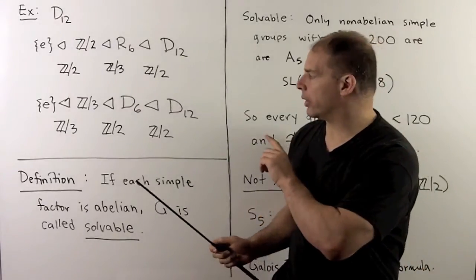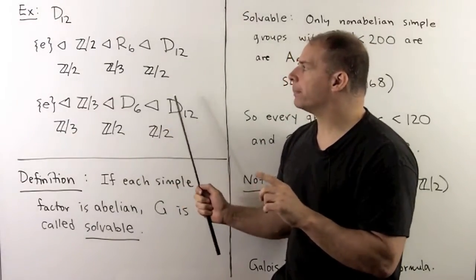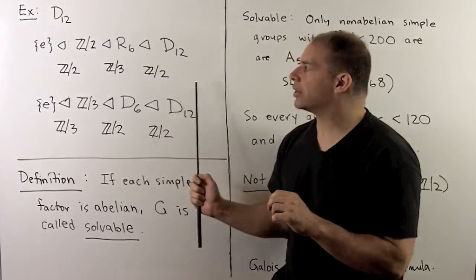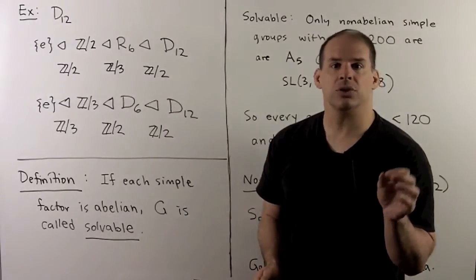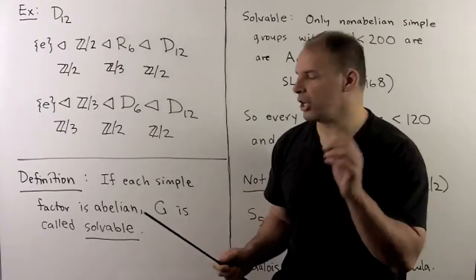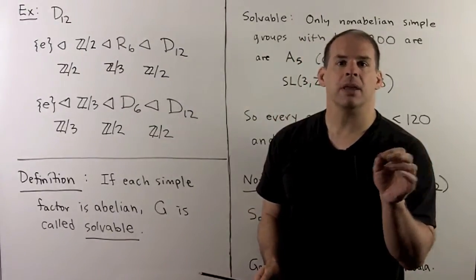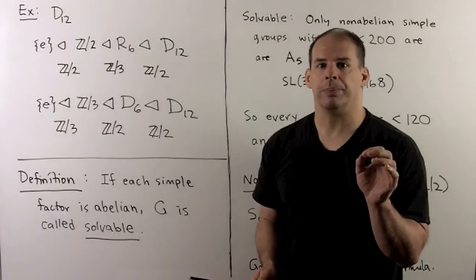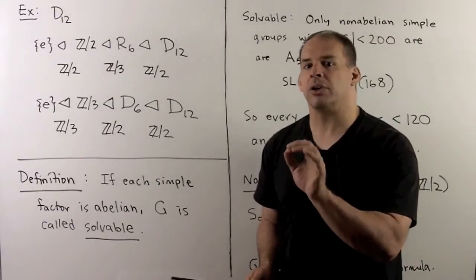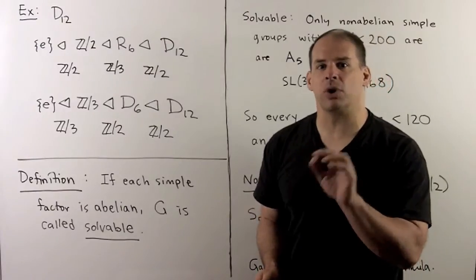Now, one thing you'll notice, and it's not an accident, in all the examples we've considered so far, these simple factors are always abelian. So they're Z mod P, where P is a prime. Definition, if each simple factor is abelian, then we'll say that G is solvable. Now, there are going to be other definitions of solvable. The one we give here is just the most convenient for our setup.